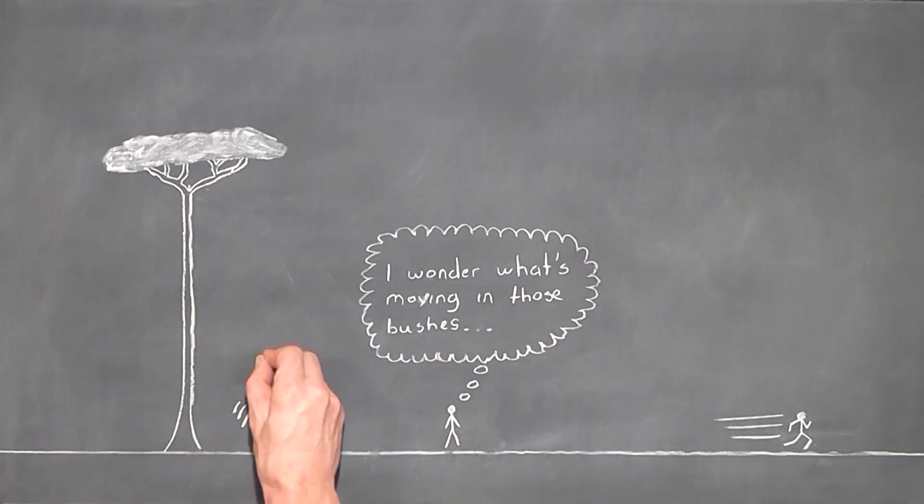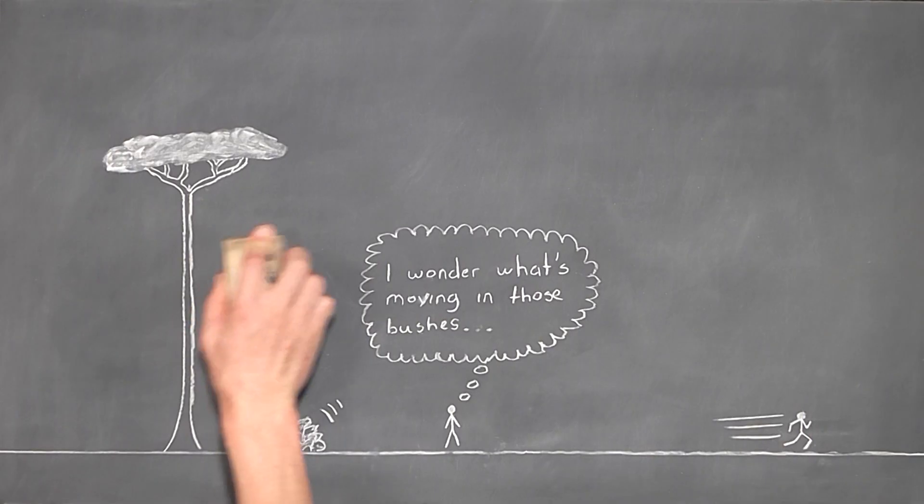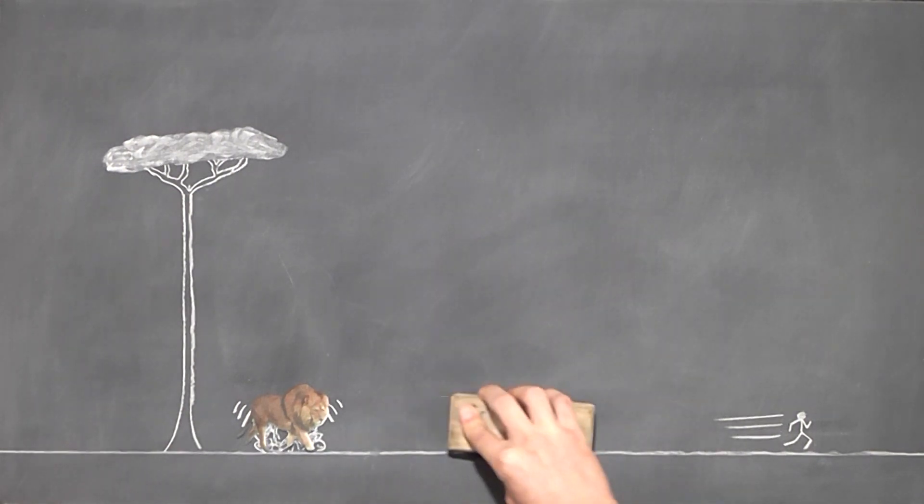Nine times out of ten the movements would be a gust of wind or a falling branch. However, on the one occasion the movement turns out to be a lion, well, Stan's not going to be building a rocket ship anytime soon.